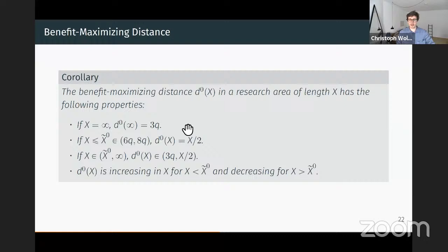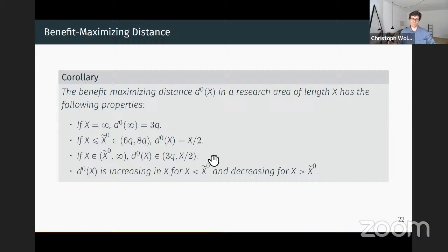To summarize: on the expanding knowledge frontier, the optimal distance is 3Q. On short research areas when deepening knowledge, you want to jump to the midpoint. On large research areas, you go somewhere between 3Q and the midpoint of the interval.